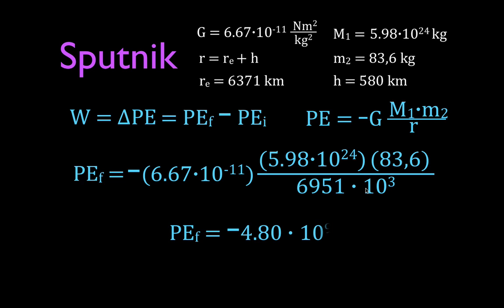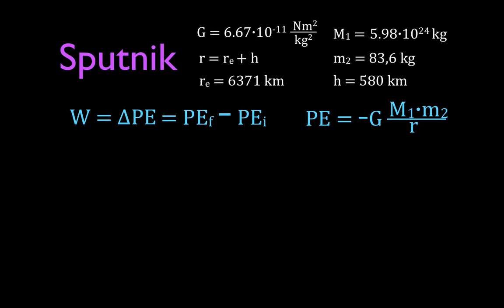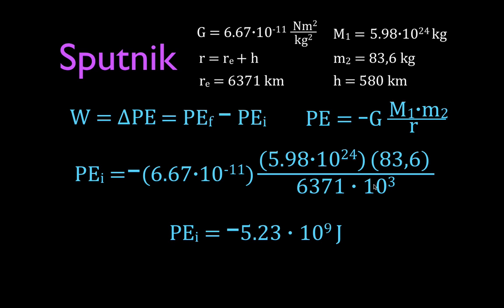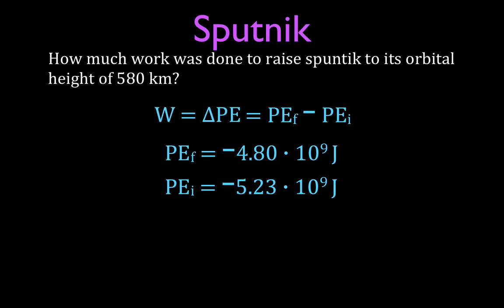When you do all the math, the final potential energy — the potential energy of Sputnik in its orbit — comes out to minus 4.80 times 10 to the ninth joules. Now we calculate the initial potential energy, when Sputnik is sitting at the surface of the Earth. It's basically the same calculation except we divide by just the radius of the Earth, 6,371 kilometers, since h equals zero. Converting to meters and computing, the initial potential energy is minus 5.23 times 10 to the ninth joules.